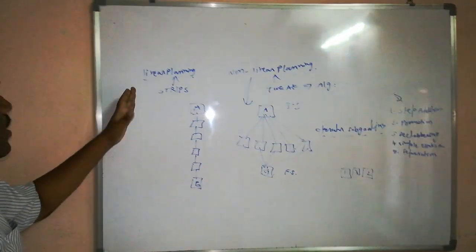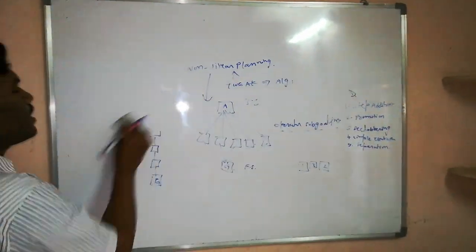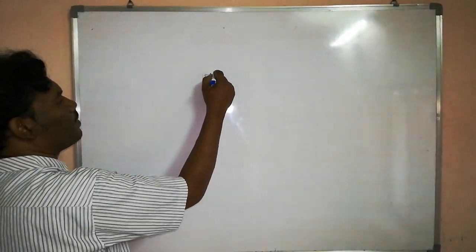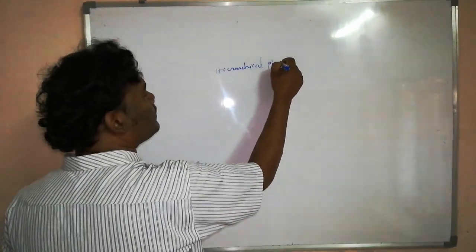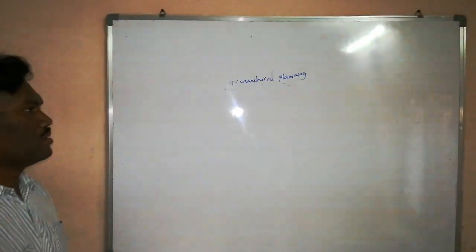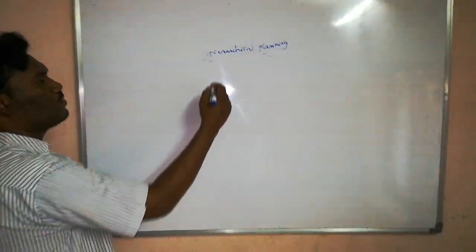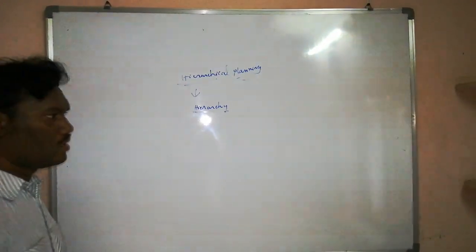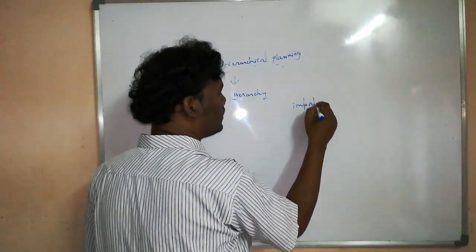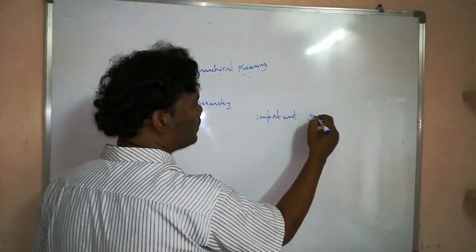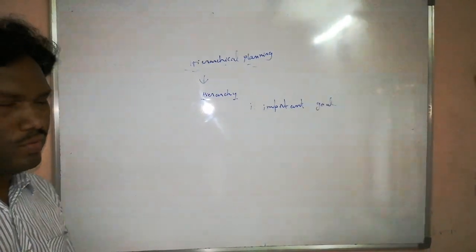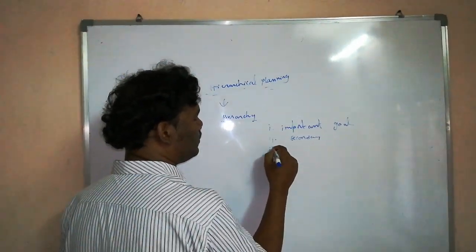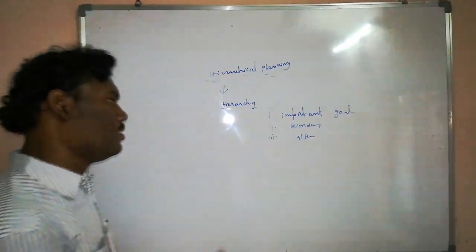We have already discussed linear planning and non-linear planning, and we also have another topic: hierarchical planning. In hierarchical planning, we follow some hierarchy to solve the problem. First, we try to identify what the most important goal is, then we give secondary importance to the next goal, and then we give alternative importance. In this way, we achieve the goal.